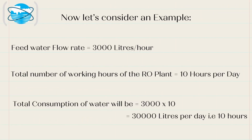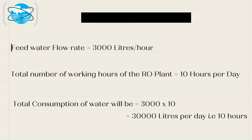If feed water flow rate is 3,000 liters per hour, and total number of working hours of the RO plant is 10 hours per day, then the total consumption of water will be 3,000 into 10, that is 30,000 liters per day.